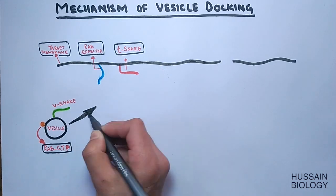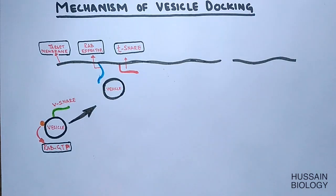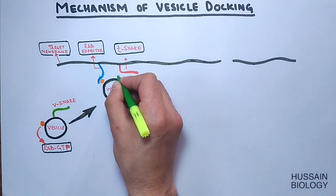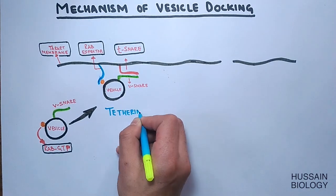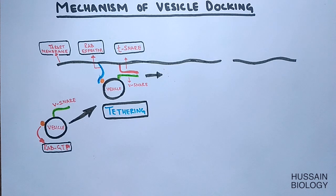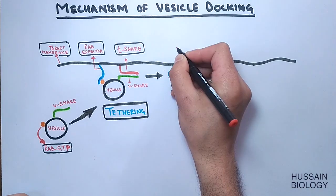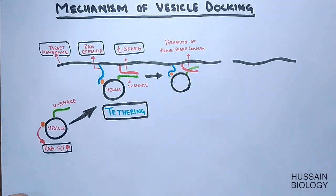In the first step, the Rab GTPase molecule — acting as a recognition molecule — interacts with the Rab effector of the target membrane. This Rab effector, being a tethering protein, tethers the vesicle towards the membrane. Through this tethering, the T-SNARE on the target membrane and V-SNARE on the vesicle come into close proximity, and interaction between these SNARE proteins occurs, forming a trans-SNARE complex.